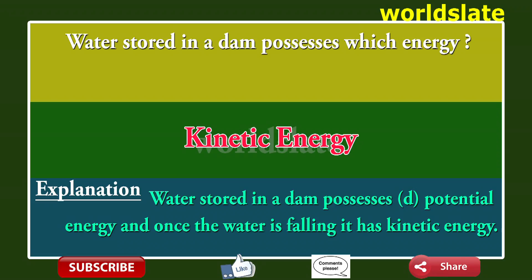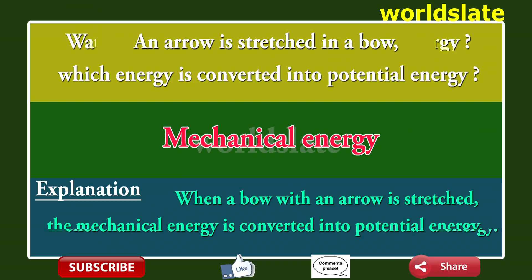Question: Water stored in a dam possesses which energy? Answer: Kinetic energy. Explanation: Water stored in a dam possesses potential energy, and once the water is falling it has kinetic energy. Question: An arrow is stretched in a bow — which energy is converted into potential energy? Answer: Mechanical energy.